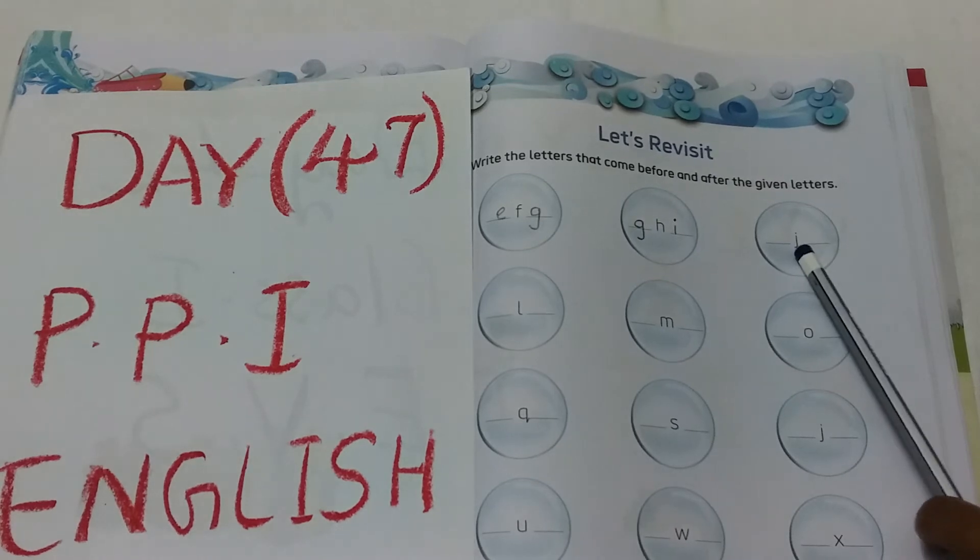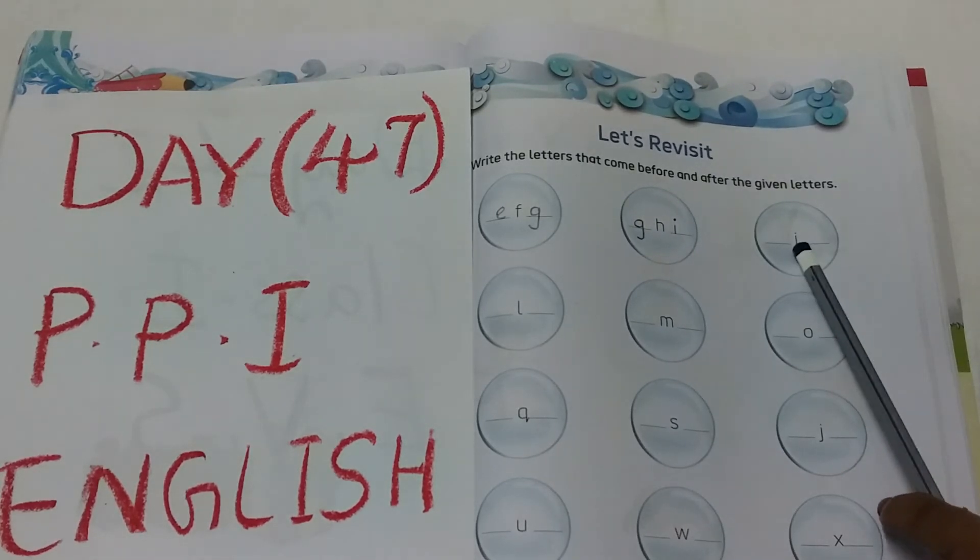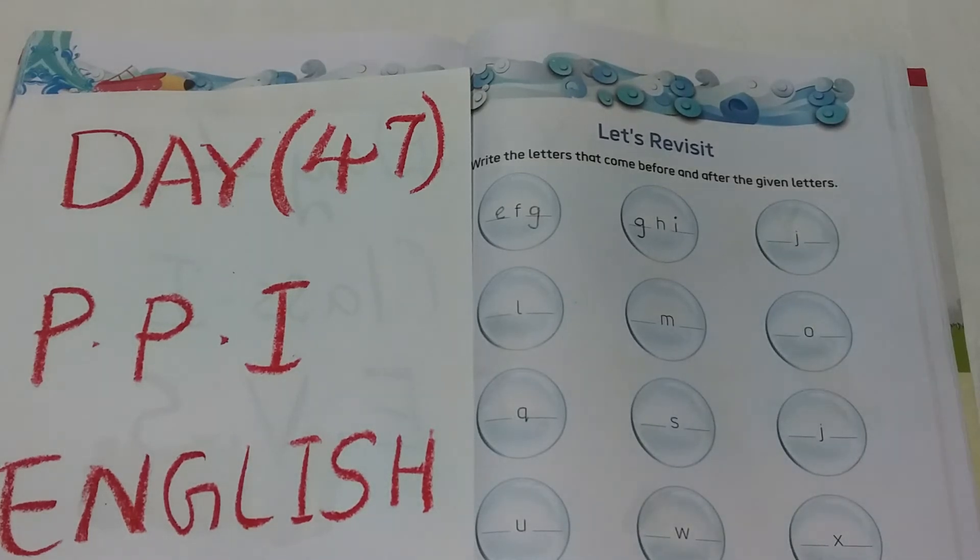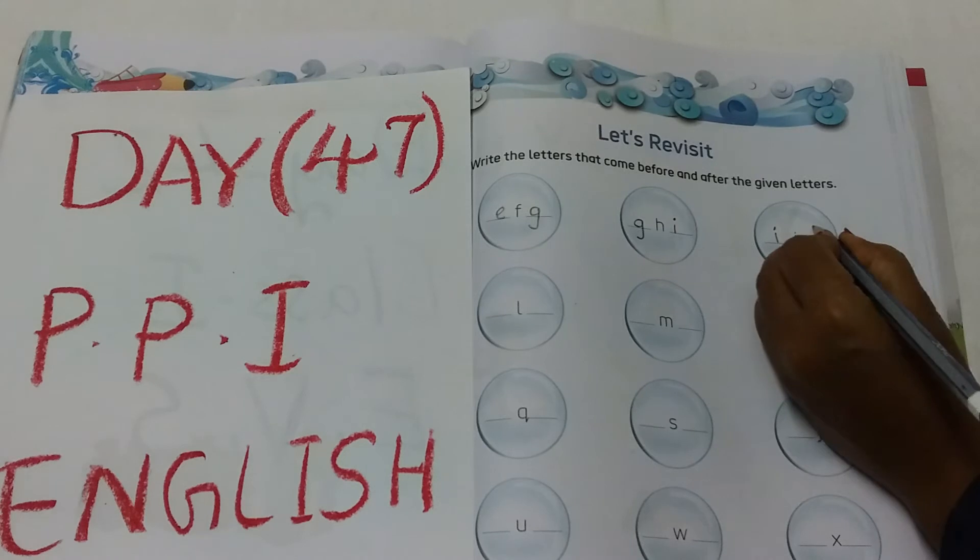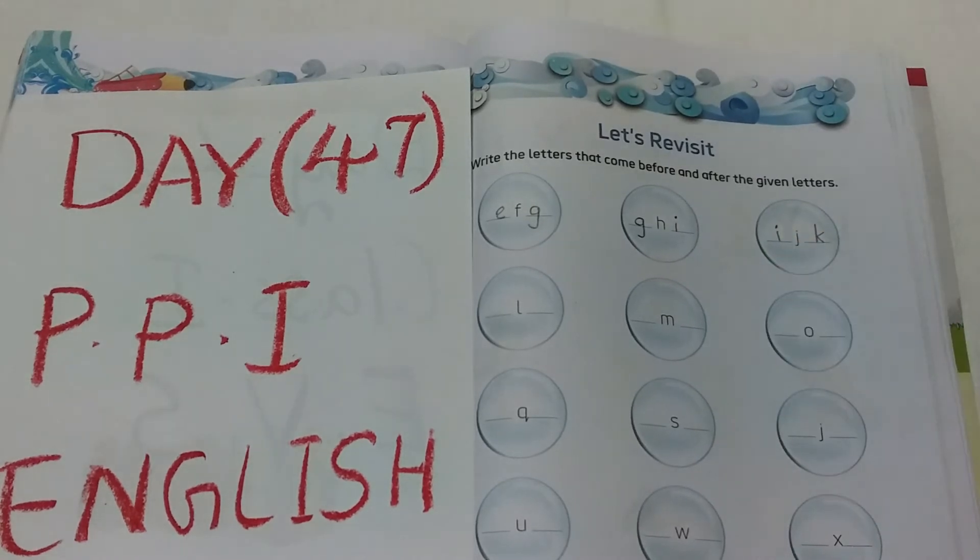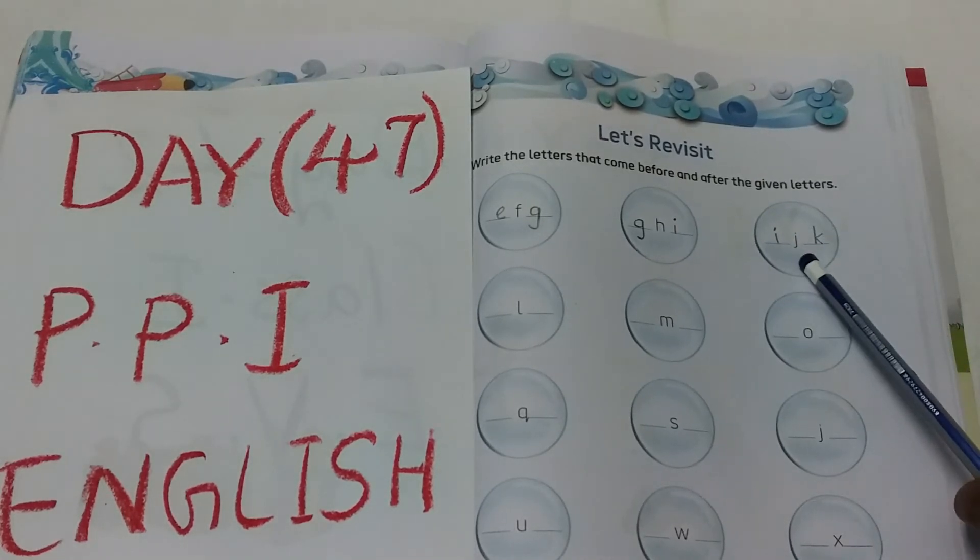Now what is this? See the next circle. It's a letter J. Before J, I. I, J, K.